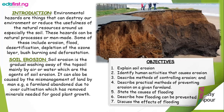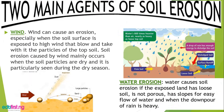The two main agents of soil erosion are wind and water erosion. When the wind is heavy, it blows away the topmost soil on the land. Also, when the rain is heavy, it washes away the topmost particles of soil from the surface of the earth.